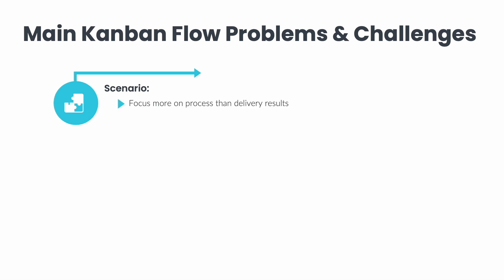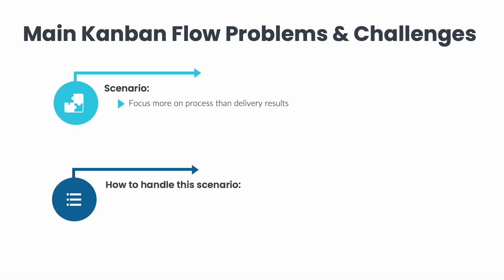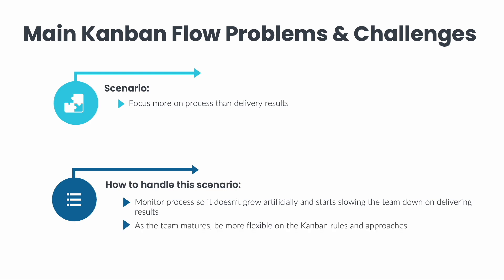The last Kanban challenge covered in this section is when teams get too excited and focus more on process than on delivery results. All the process and Kanban method outlined in this class is to deliver results and complete quality work in the shortest time possible. Kanban is one of the leanest and lightest approaches compared to many other delivery approaches. Make sure the process doesn't grow artificially and start slowing the team down. When you start as a new team, be more strict on all the Kanban rules and approaches. However, after the team matures, feel free to be more flexible with WIP limits, classes of services, and team policies — while not compromising quality. A good practice is to review all your processes and rules from time to time and ask yourself which are still needed, since most teams add processes but don't remove any, which can slow delivery.